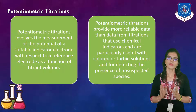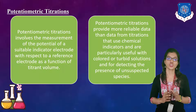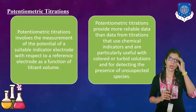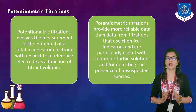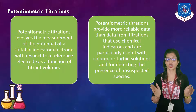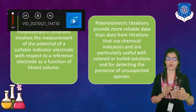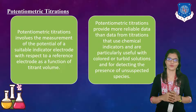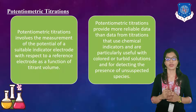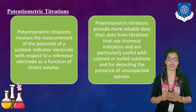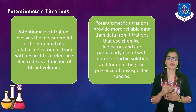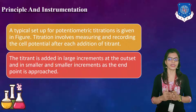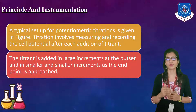Now let us move ahead to potentiometric titrations. Potentiometric titrations involve the measurement of the potential of a suitable indicator electrode with respect to a reference electrode as a function of titrant volume. Potentiometric titrations provide more reliable data than titrations that use chemical indicators, and are particularly useful with colored or turbid solutions and for detecting the presence of unsuspected species.